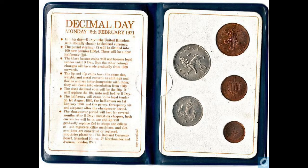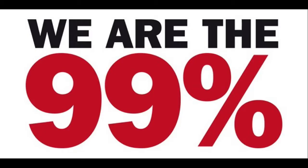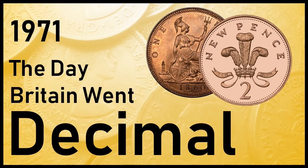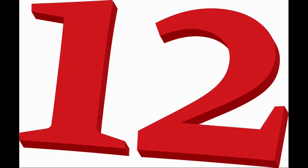This video will also be useful for anyone born after 1970 and anyone who is not English, so that's about 99% of the world. The first thing to be aware of is that the currency changed in 1971 when decimalization occurred. Before 1971, the English currency was based on the number 12 and not the number 10.